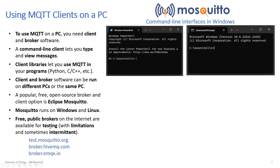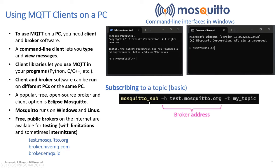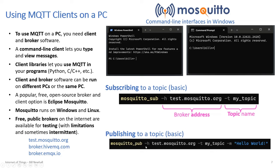There are free public brokers on the internet available for testing. There are some limitations — if you publish too much they might lock you out, and sometimes they're intermittent — but I've never had a time when all of them were down. For subscribing, you use the broker address (a URL or IP address) and supply the topic name. For publishing with the Mosquitto client, you use 'mosquitto_pub', '-h' for the broker address, '-t' for the topic, and then your message. That's really convenient for testing.